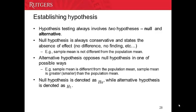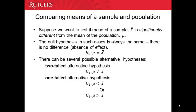In most cases, we denote the null hypothesis as H0 and the alternative hypothesis as H1. Let's take a look at one hypothesis where we compare the mean of the sample and the mean of the population. We use X-bar to represent the sample mean and mu to represent the population mean. We want to test whether the sample mean is significantly different from the population mean.